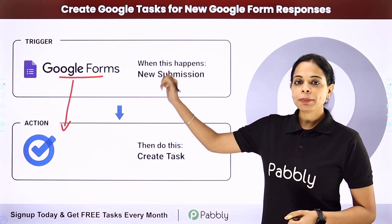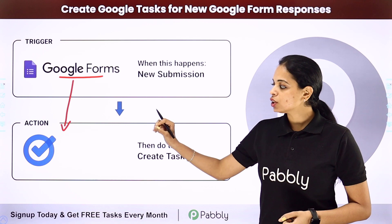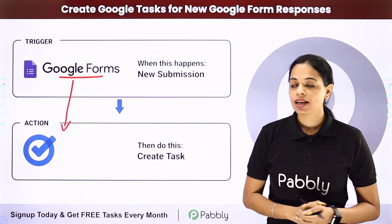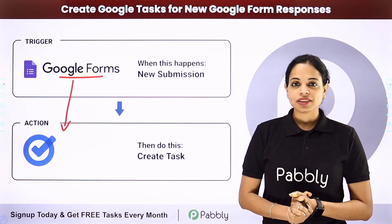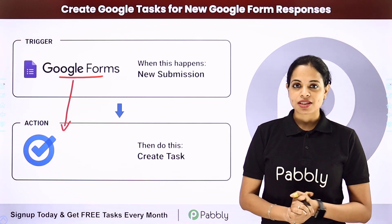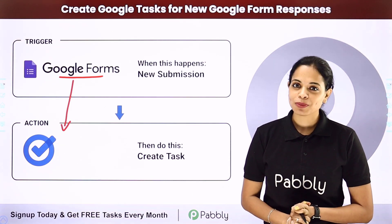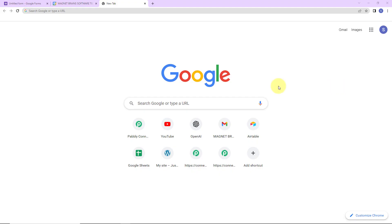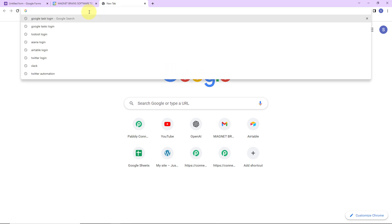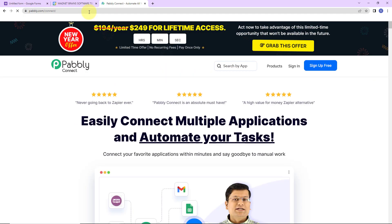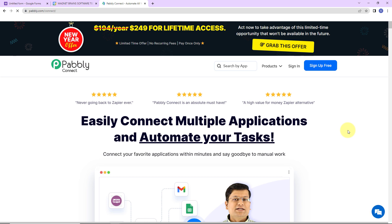Here your trigger application would be Google Forms and your action application would be Google Tasks. To understand how you can integrate and automate this entire process, let me take you to my screen. To begin, we are first going to type the URL pabbly.com/connect and here we have reached the landing page of this software.